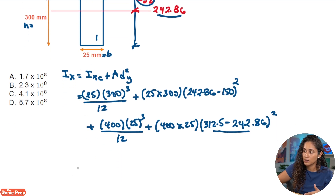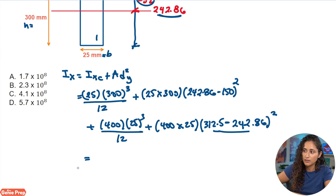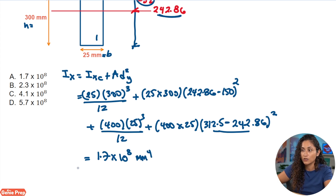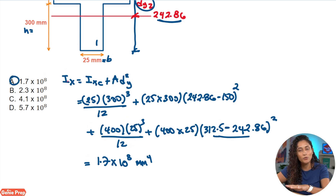Plugging all these numbers into your calculator, you get 1.7 times 10 to the power of 8 millimeters to the power of 4. Looking at the multiple choice options, the answer is A.